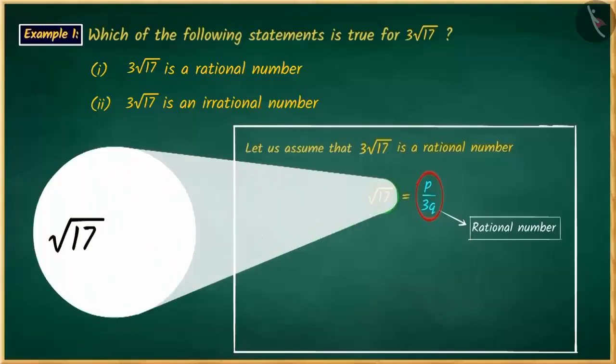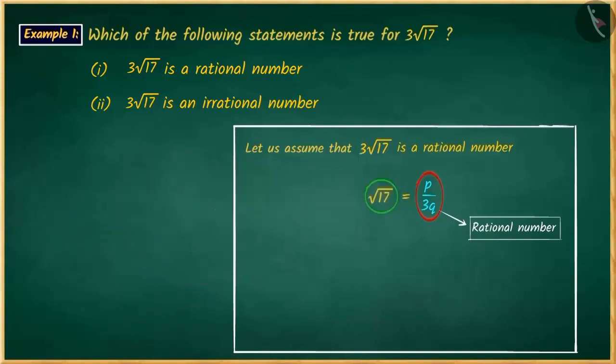Can you write square root of 17 as p upon 3q? No. The square root of 17 cannot be written as p over 3q. That is, it is an irrational number.